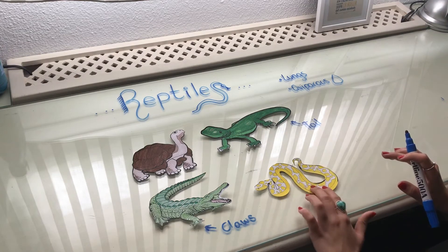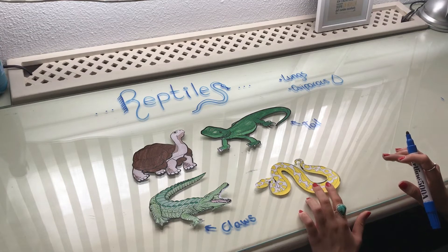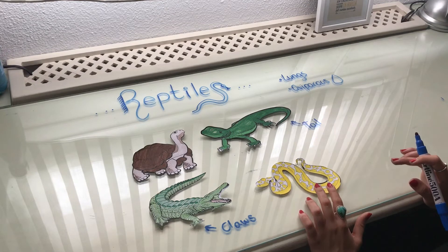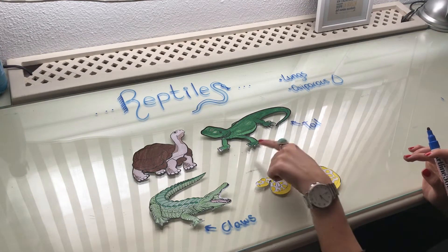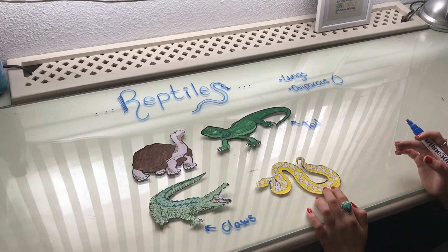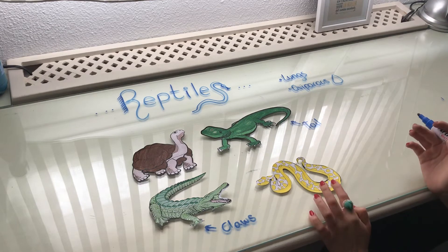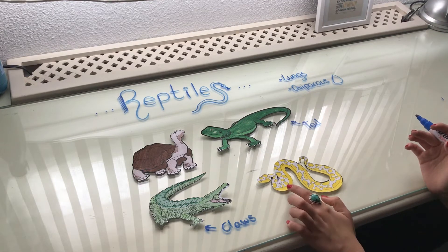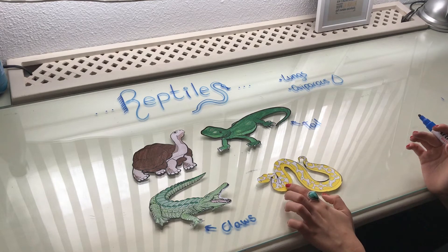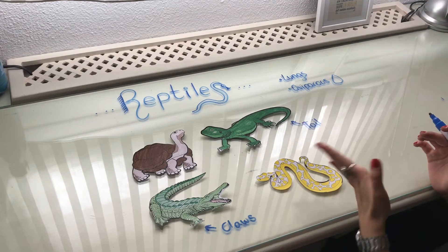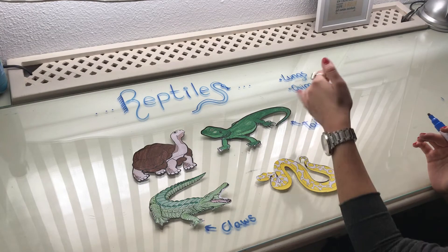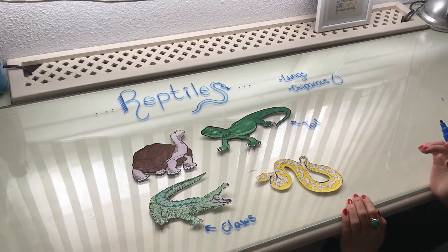As we can see, snakes are completely different. They don't have tails or sharp claws because they don't have extremities. Instead, they have very strong muscles in their body so they can move around and slither across the ground.